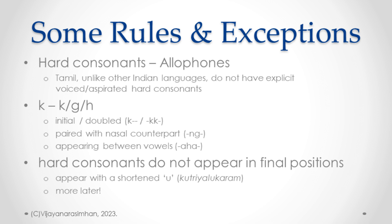So Ka remains Ka in the initial position or when doubled, as in Akka or Ikka. But when a hard consonant appears after its nasal counterpart, it becomes voiced and nasalized — for example, Ka after Ng becomes Nga, as in 'thangham'. When appearing between two vowels, the hard consonant is sometimes aspirated — Ka becomes Ha, as in 'aham' — though some speakers keep it as Ka.